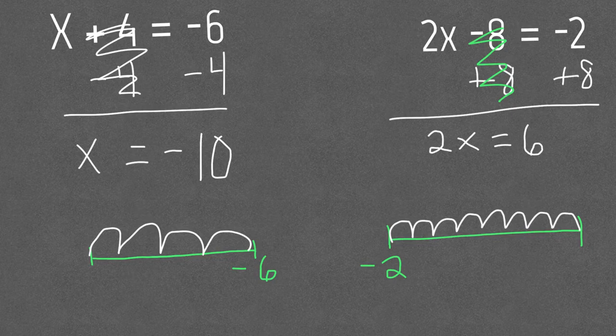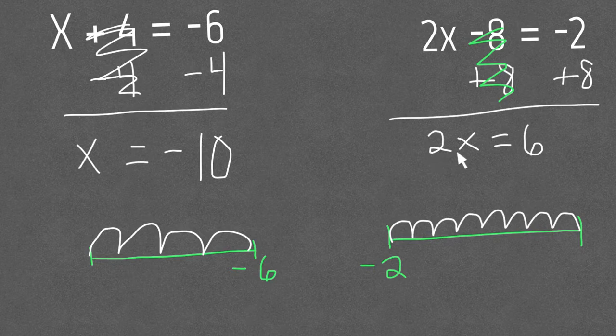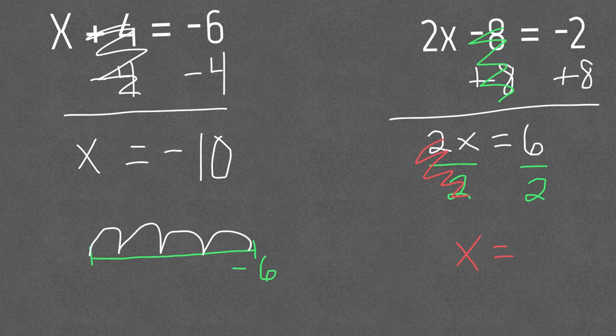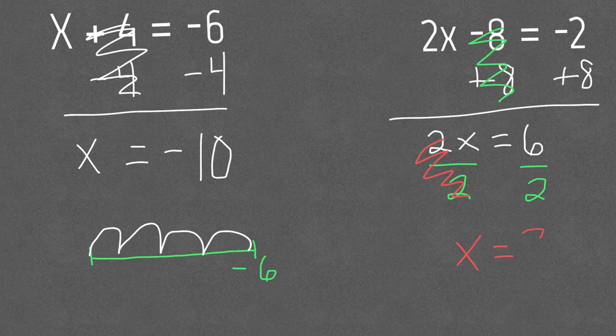Next step I'm gonna have to look and see I'm gonna divide both sides by 2. Okay so 2's would be cancelled out. I'd be left with x and then I can see that 6 divided by 2 would be 3. So for this problem x equals 3.